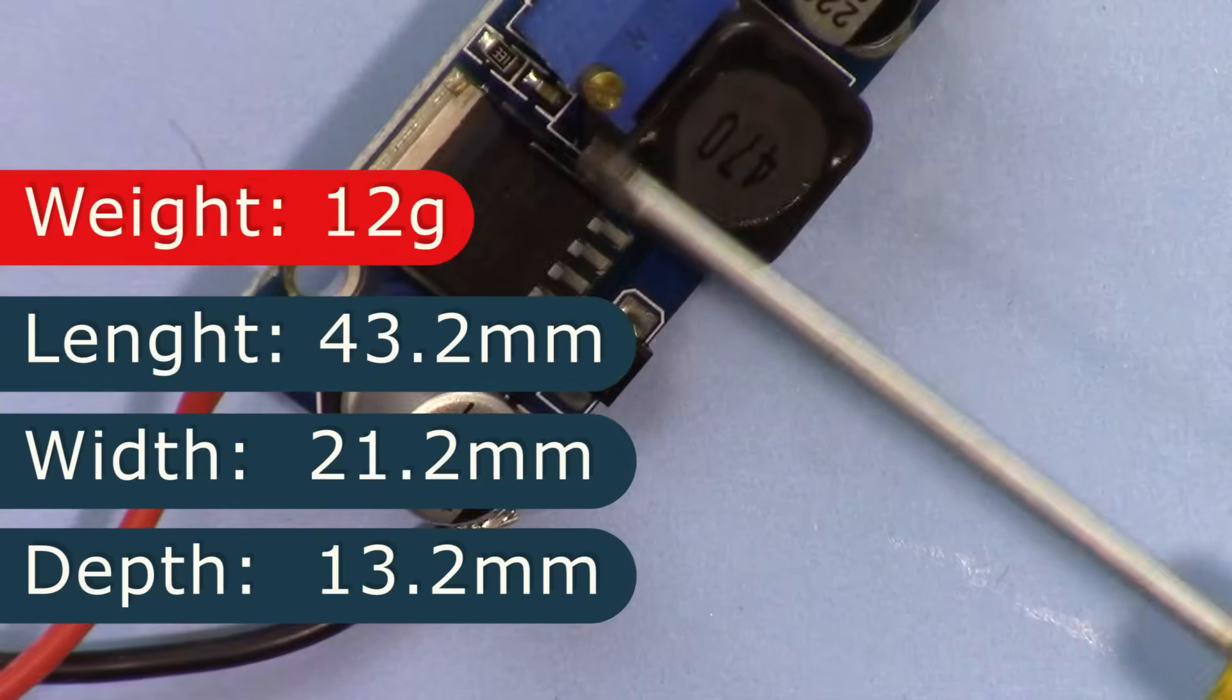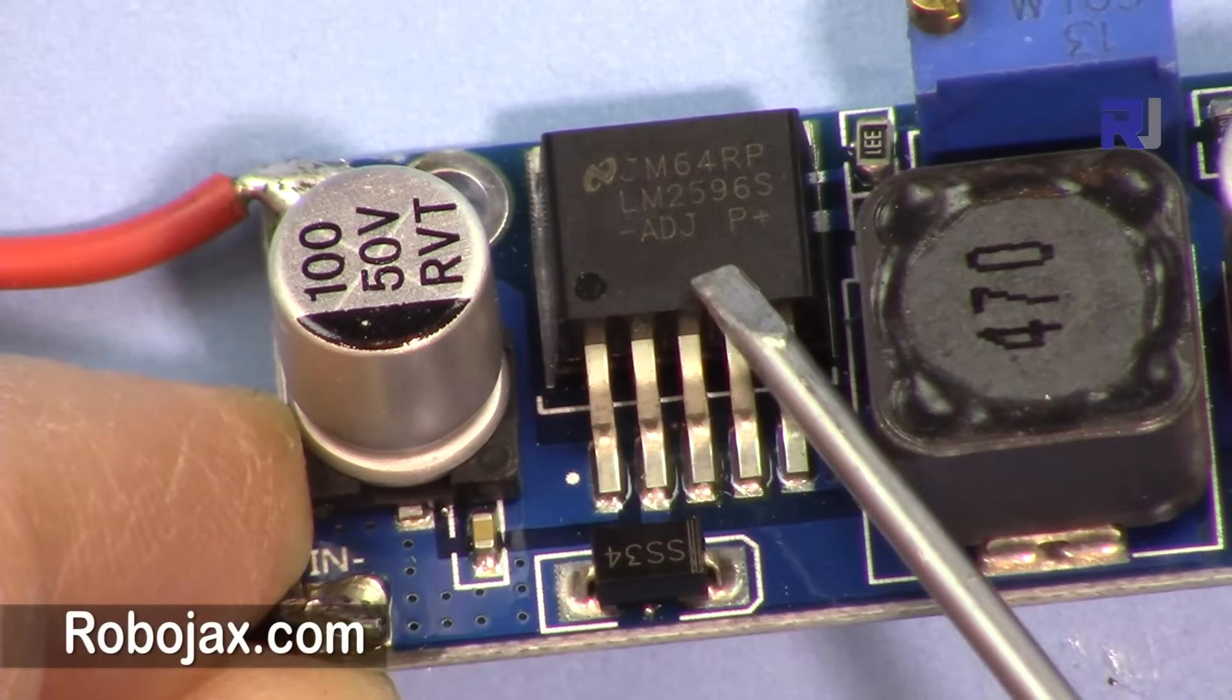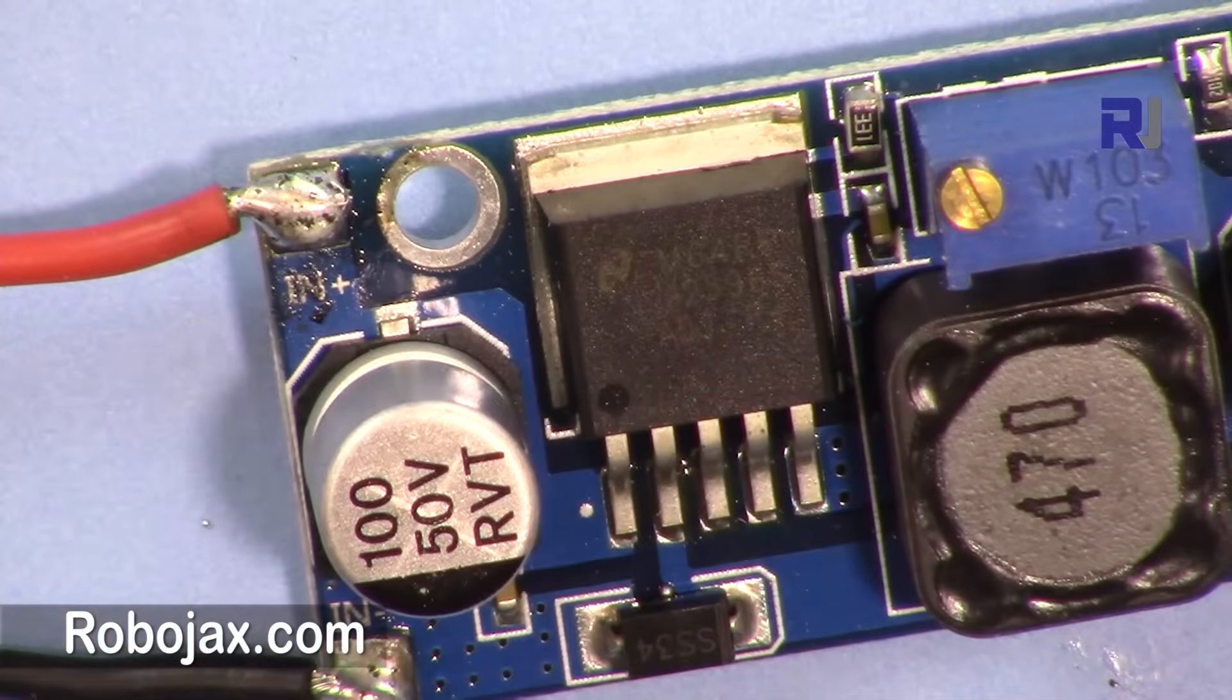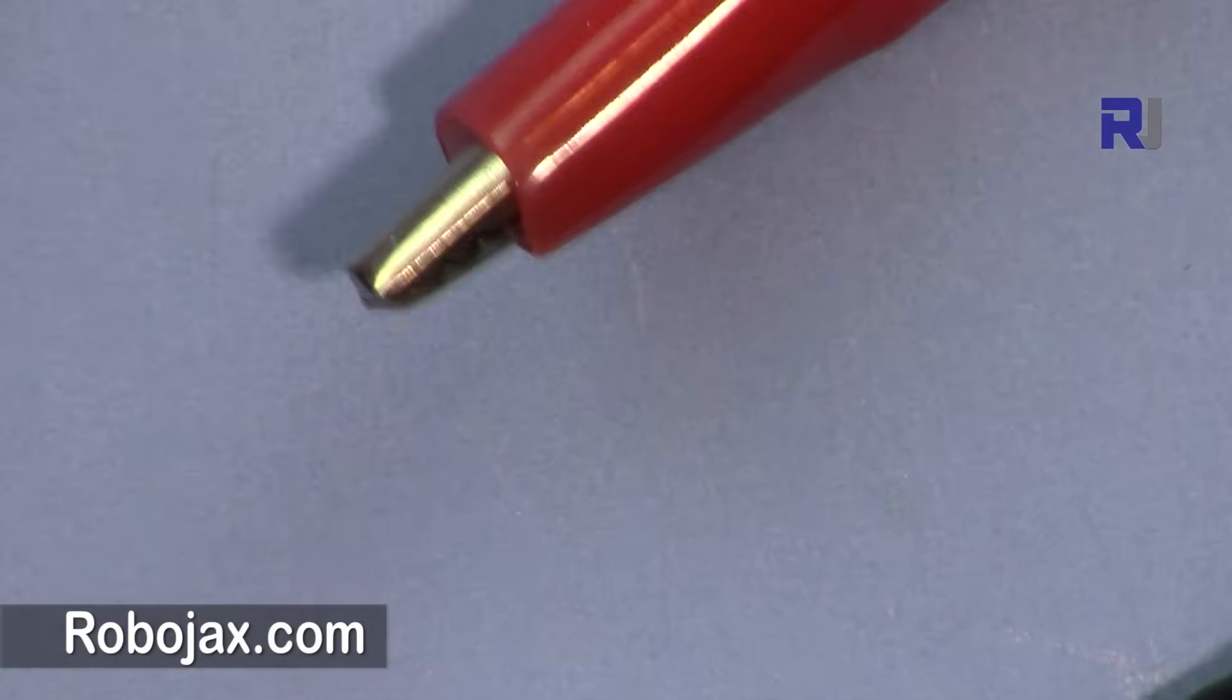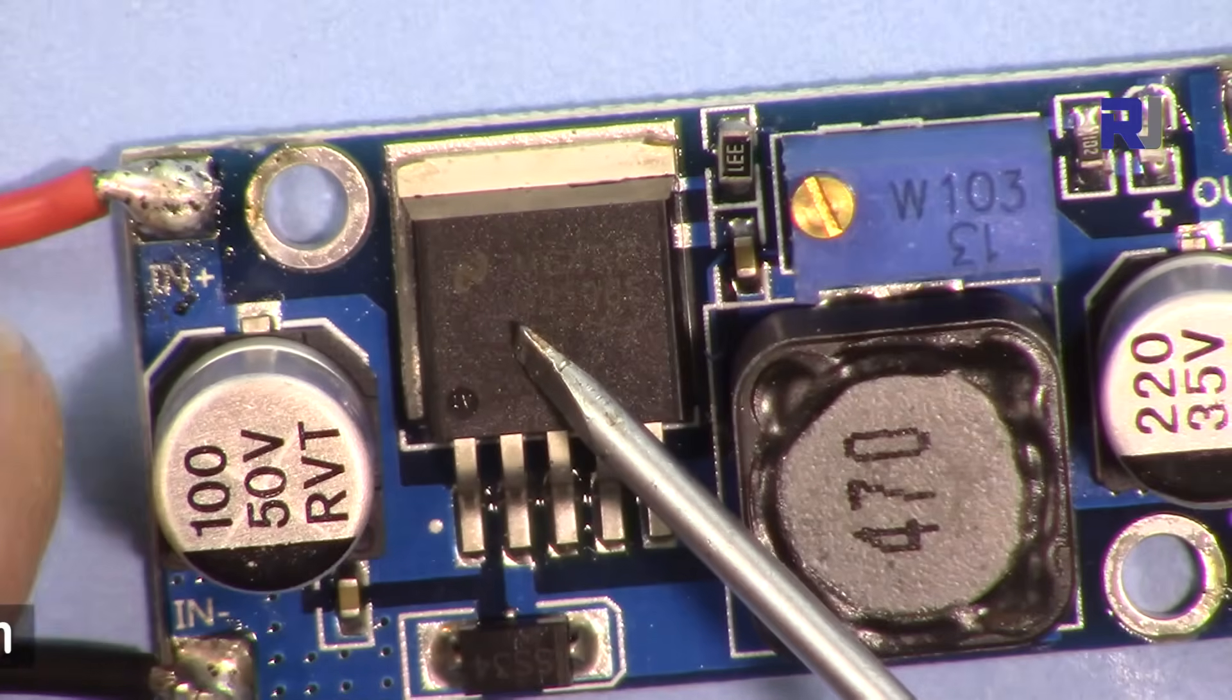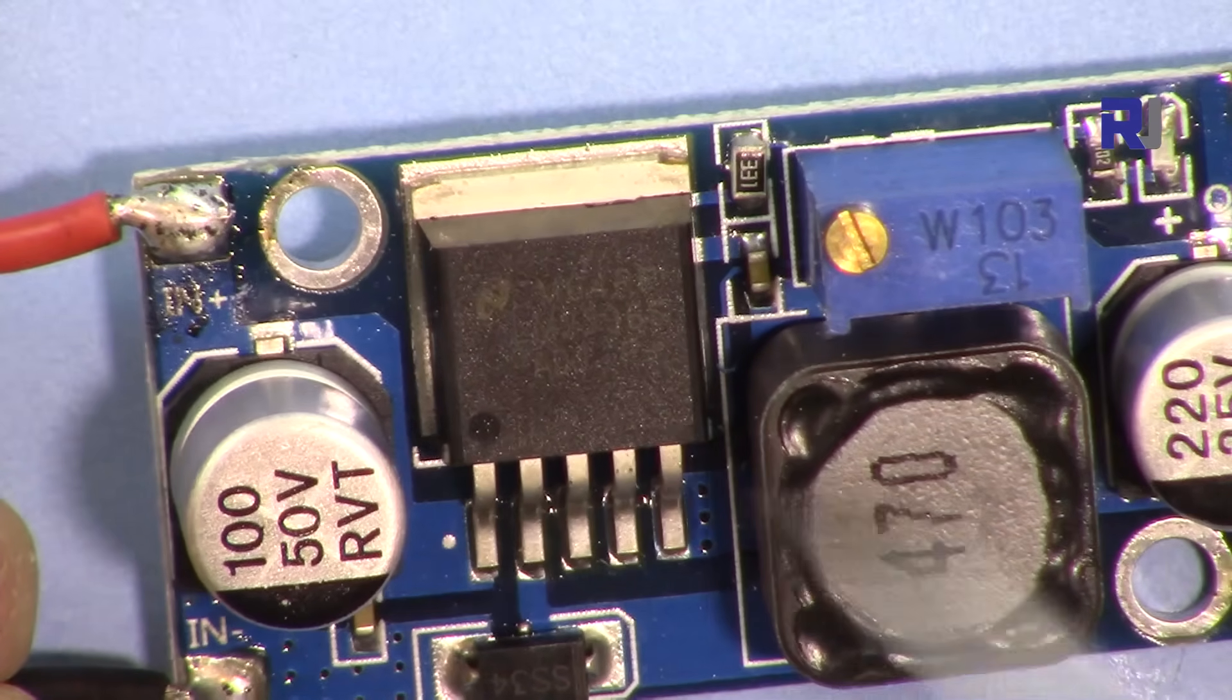This is the module. As you can see we can read the name here, LM2596, that's the chip. We have positive input here and this is the ground or negative. I've connected it to these clips to make it easy for this video. This runs with very minimum components. We have a potentiometer that we can change, a diode here, then we have an inductor, two capacitors at the end, and some supplementary components here.